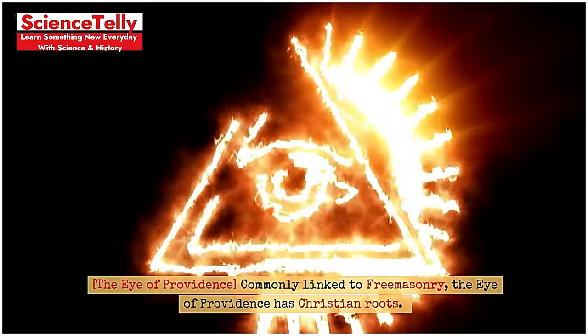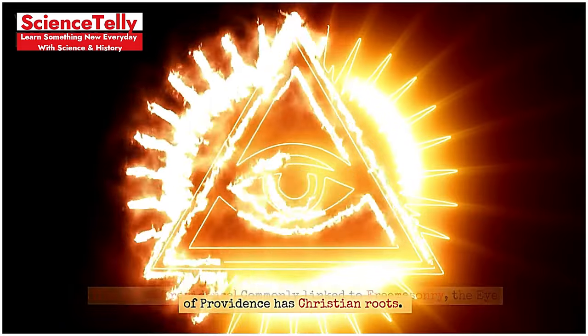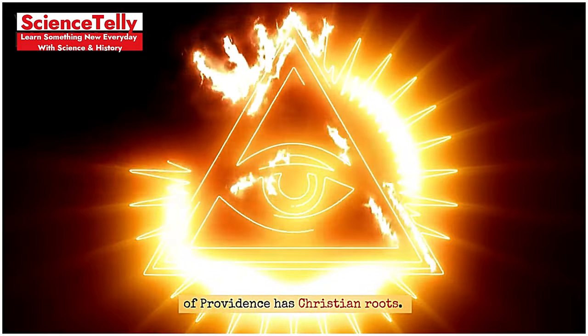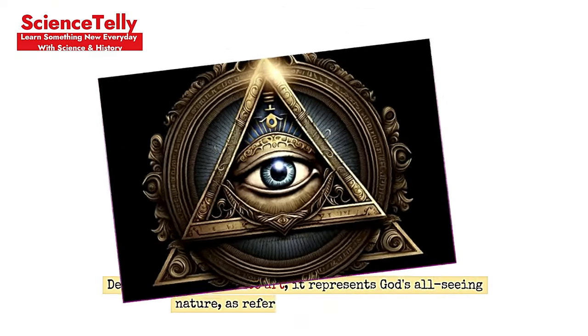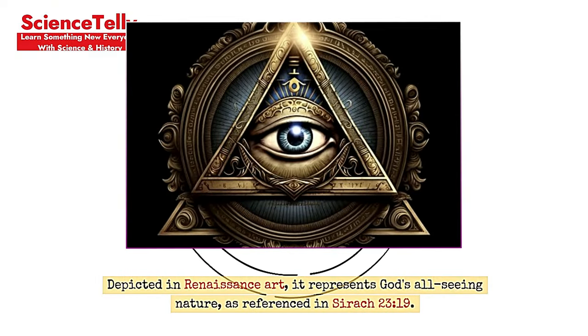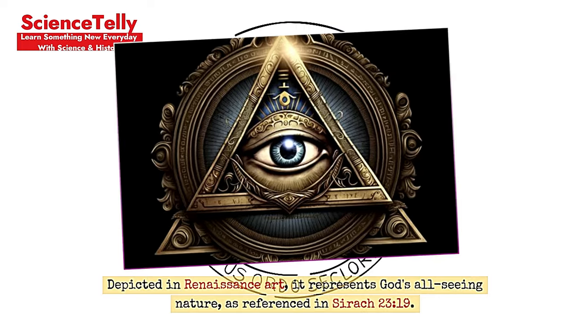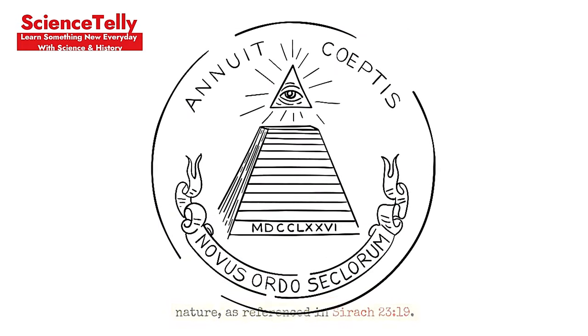The Eye of Providence, commonly linked to Freemasonry, actually has Christian roots. Depicted in Renaissance art, it represents God's all-seeing nature, as referenced in Psalm 33:19.